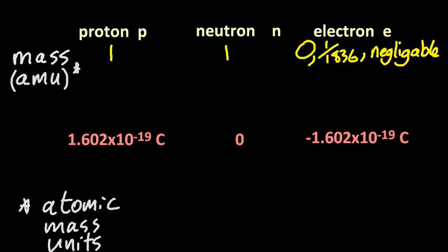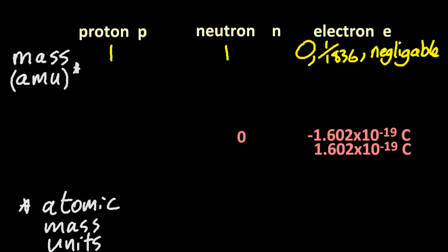Looking at the charge, you'll notice that the charge on a proton is equal and opposite to that of the charge on an electron, and then a neutron is 0.